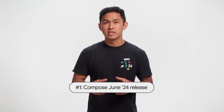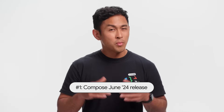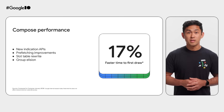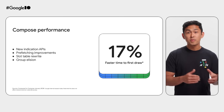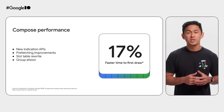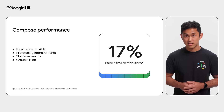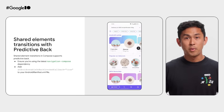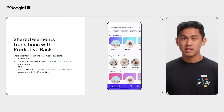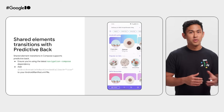Number one, the latest version of Compose brings significant performance improvements no matter what form factor you're targeting. The latest release improves the time to first draw by 17% compared to the January 2024 release. Apart from performance, Compose also adds shared element transitions so that you can add delight to your app when moving between screens.